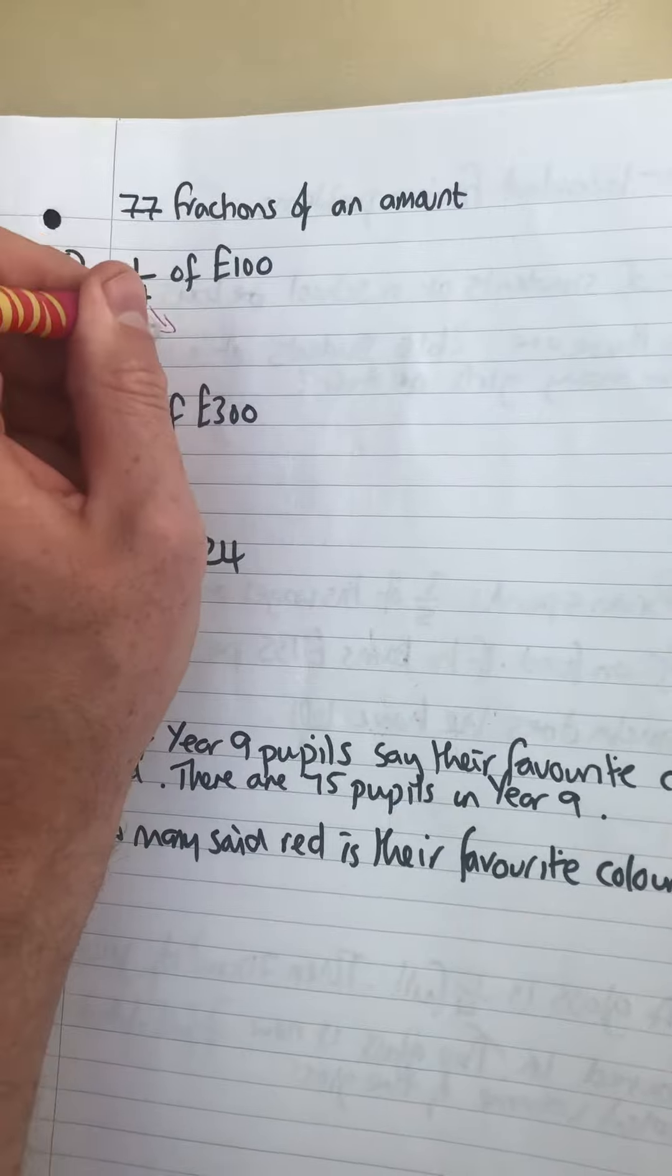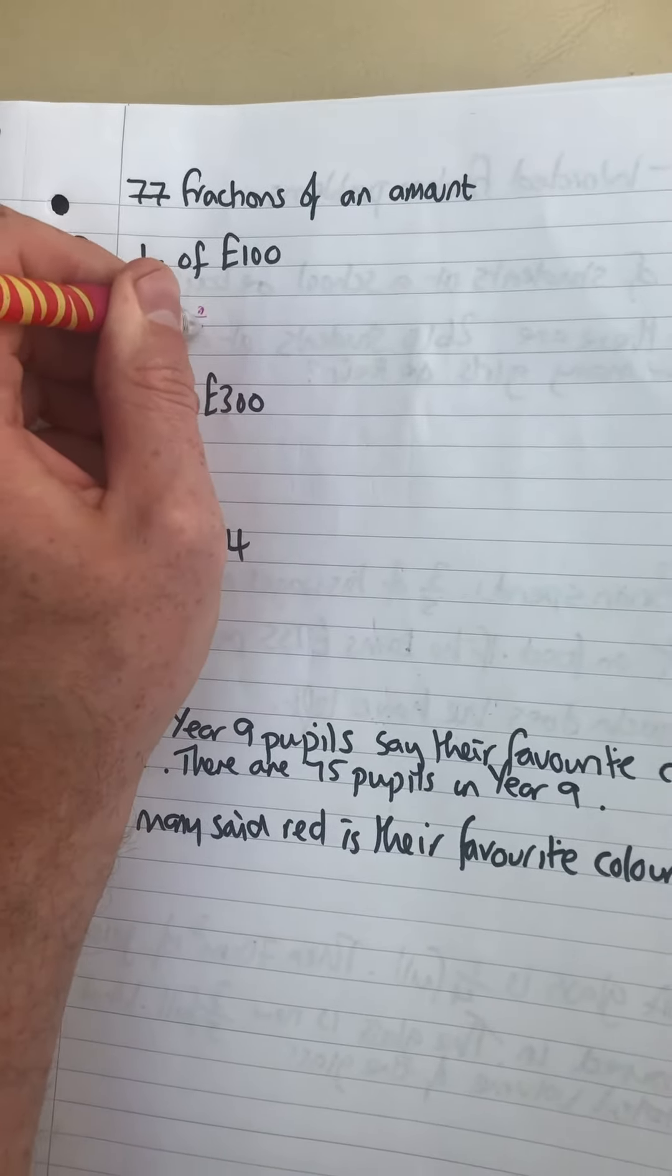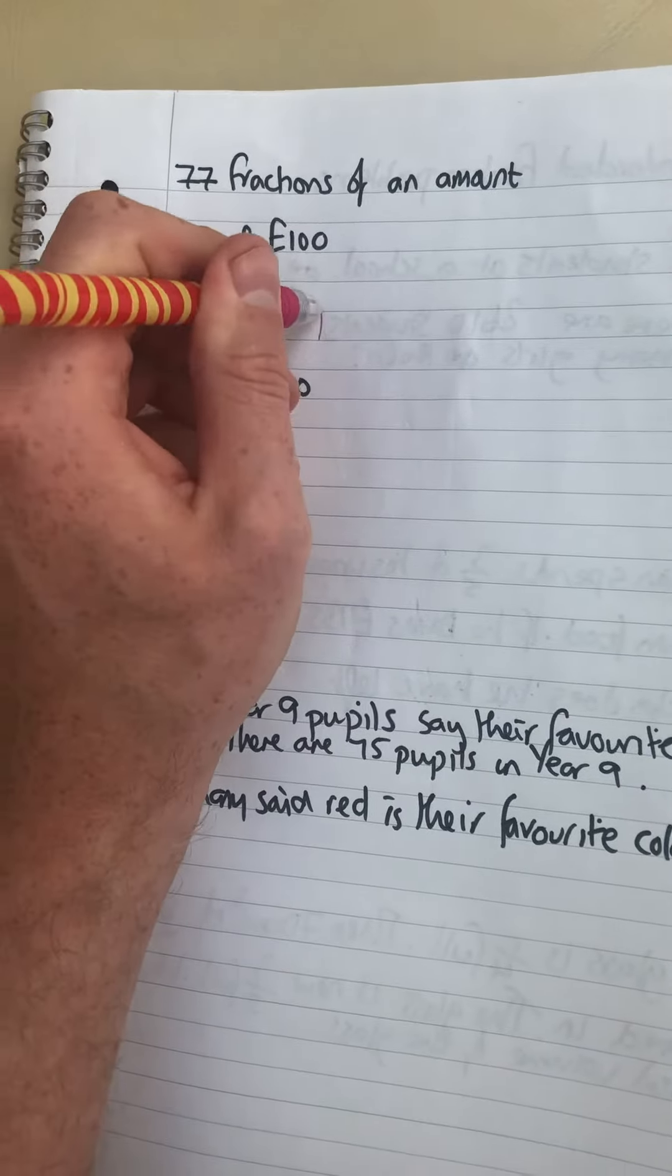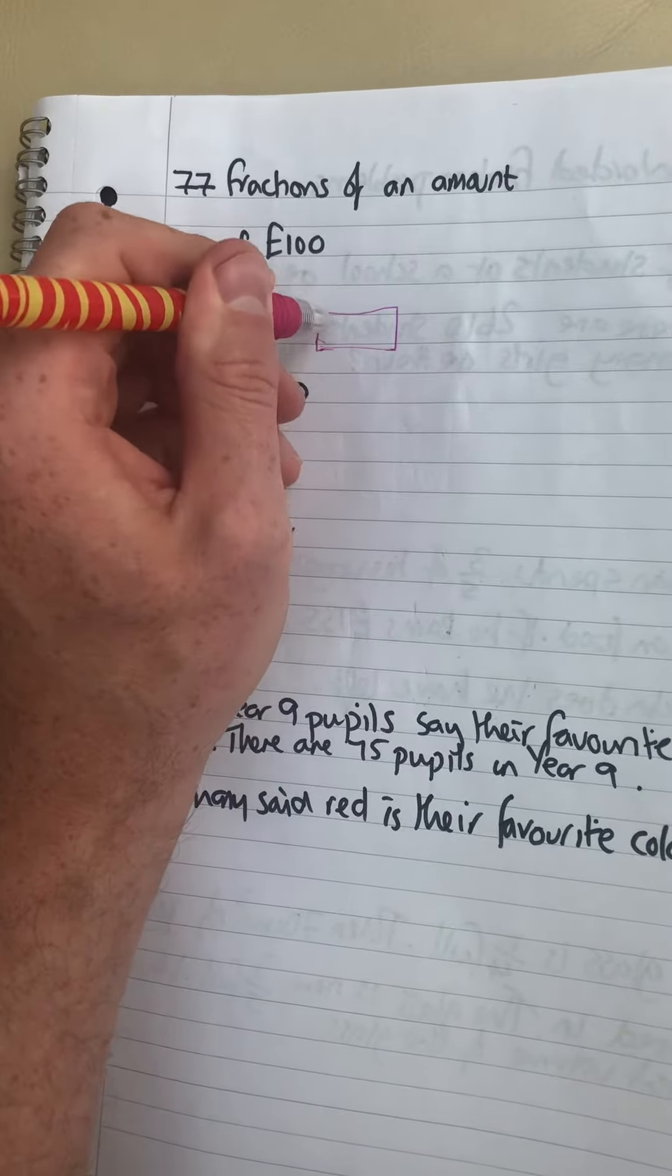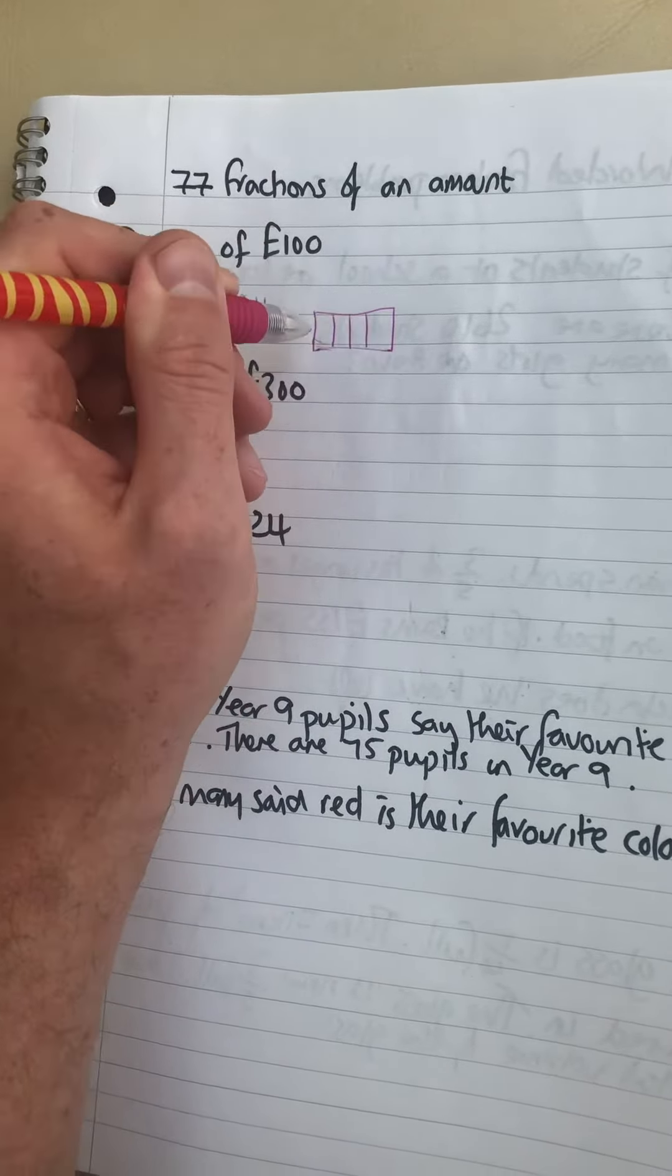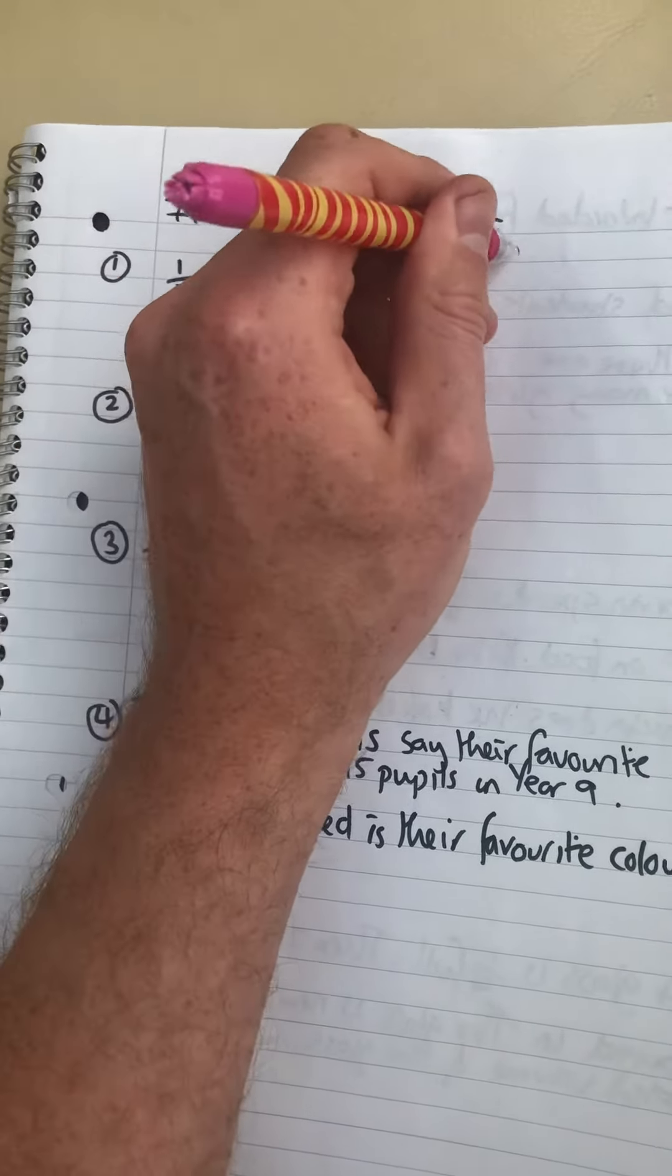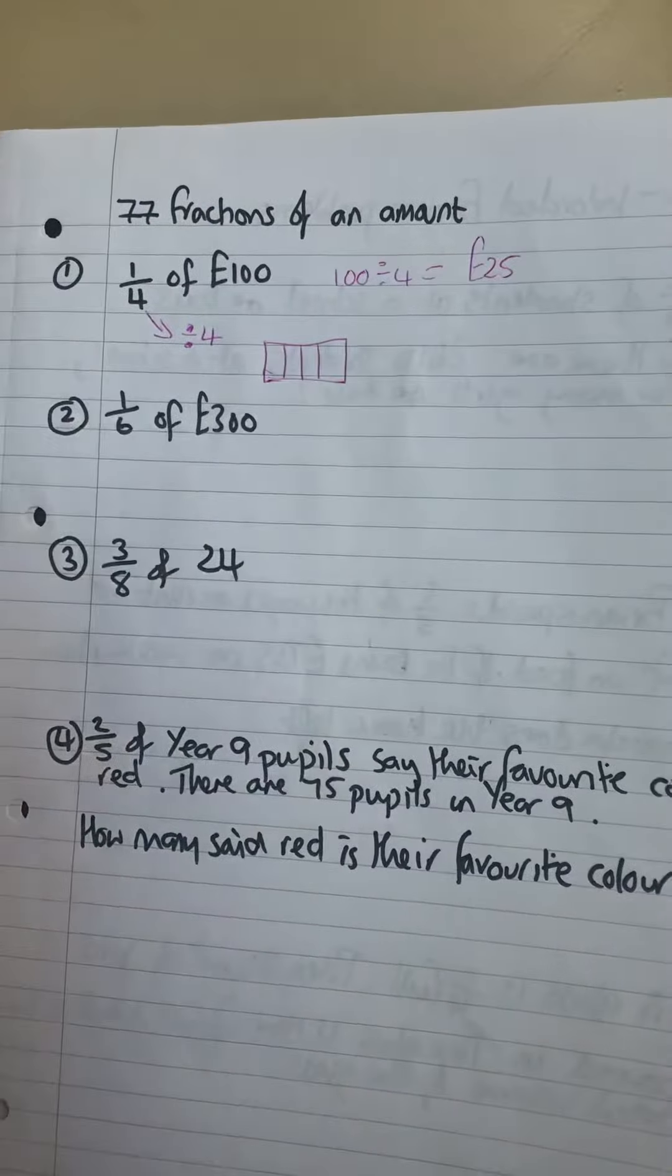What else is the same as a quarter? Well, if we divide by four that'll give me a quarter because you're splitting a whole into four equal parts. So what's 100 divided by four? That's 25.